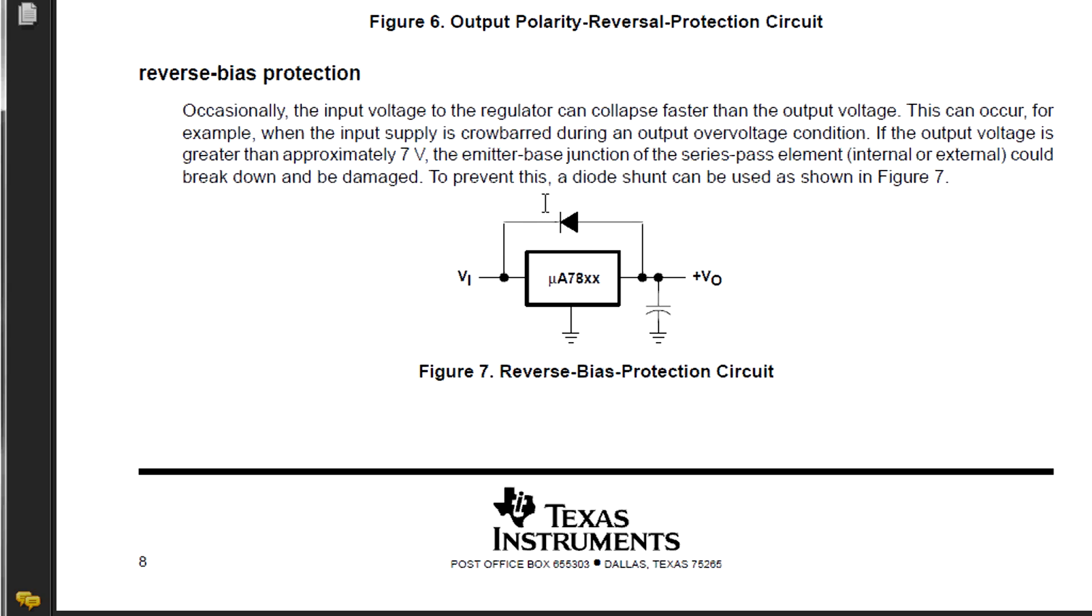or if you're using an external series pass transistor for extra current, it can break down, it can be damaged. And to prevent this, it's a standard industry practice to put a reversed biased diode in there which actually limits the voltage across the input and output differential on the voltage regulator. It's the same for the 7805 or for the LT3080.